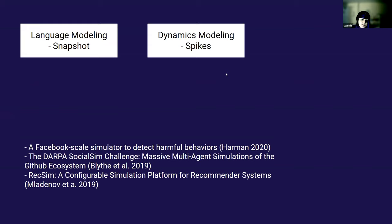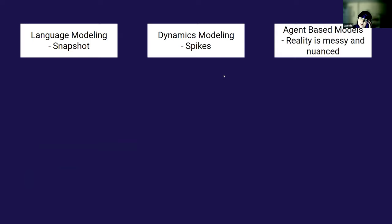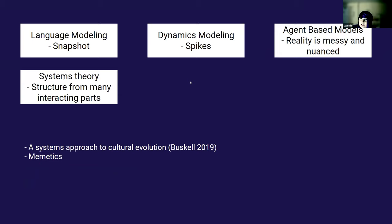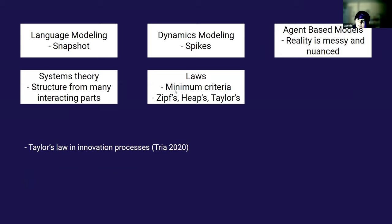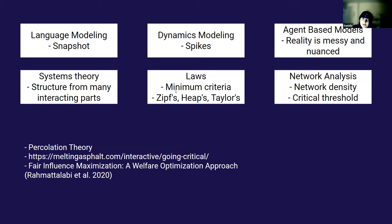Another approach is agent-based or physics models, which find that reality is very nuanced and hard to define concretely. People try a systems theory approach studying the structure of many interacting parts, but it's hard to choose the right level of fine-grainedness. You can use empirical laws from real-world data to validate your models. There's also the network perspective, looking at how data moves across through opinions and the density of networks.